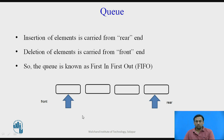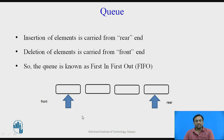For example, consider a queue whenever a student comes to deposit fees at the counter. They join from the back end, that is the rear end, and deposit their fees. After depositing the fees, they leave the counter from the front end. The next person gets added towards the rear end. After receiving the service it leaves from the front. That is why the queue is known as first in first out, FIFO.